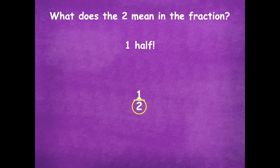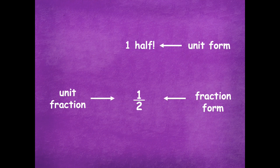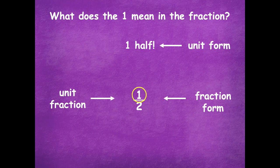What does the two mean in our fraction? What does that represent? It's our two halves, or our two equal parts. Here's unit form, here's fraction form. This is a unit fraction because it's one part. What does the one mean in our fraction? Yeah, it means one part of the whole — we're talking about one copy or one part of the equal parts.